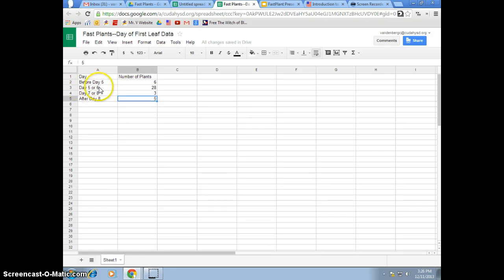Before day 5. Day 5 or 6. Day 7 or 8. After day 8. When did your plant or your plants have their first leaf? So I made up some data here. So let's say that before day 5, 6 plants within the class had their first leaf before day 5. 28 people had their first leaf between day 5 or day 6. 3 plants had their first leaves between day 7 or day 8. And 5 plants had their first leaf after day 8. I put that information in.